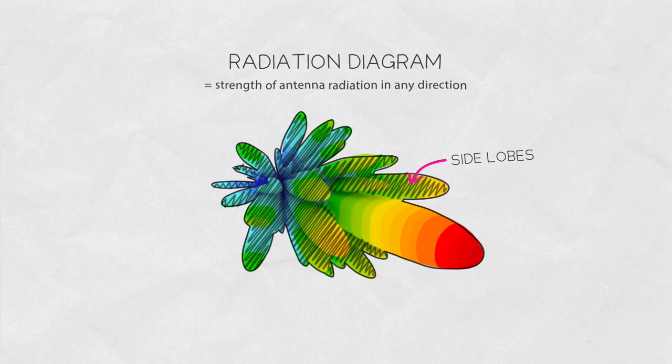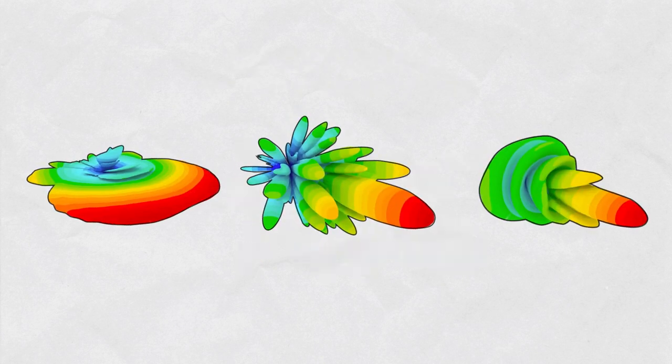The size of the side lobes depends on the type, the size, and the construction of the antenna. It's important to understand that through side lobes, antennas transmit but also receive signals from unwanted directions.